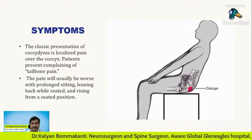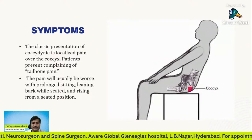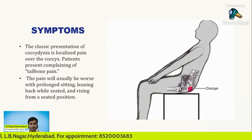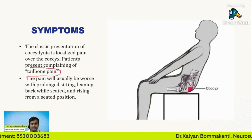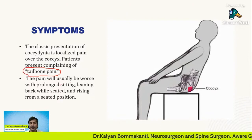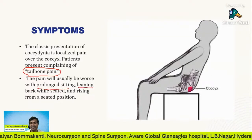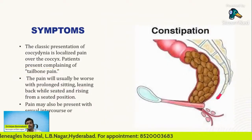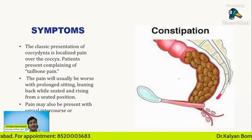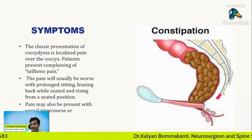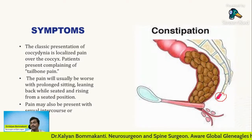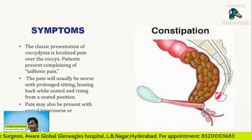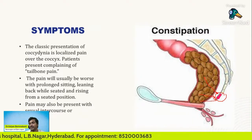Symptoms: the classic presentation of coccydynia is localized pain over the coccyx — the patient presents complaining of tailbone pain. As explained before, the pain is usually worse with prolonged sitting, leaning back while sitting, and also while rising from a sitting position. Pain can also be present during defecation — if there is constipation, the hard feces during defecation will exert pressure on the already injured coccyx and cause exacerbation of tailbone pain symptoms.